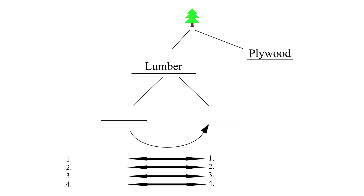Lumber is defined as solid wood — it was a tree not very long ago. Plywood is a bunch of layers of thin lumber that have been glued and pressed into a big sheet that is four feet wide and eight feet long.